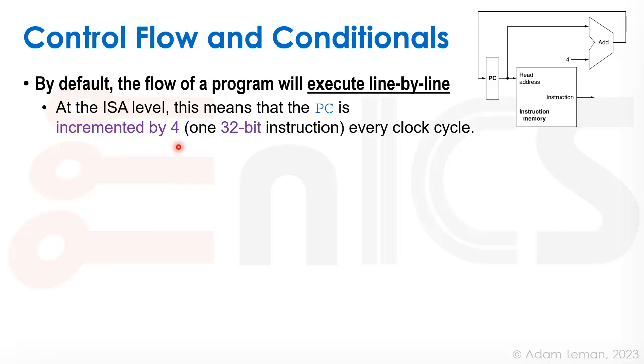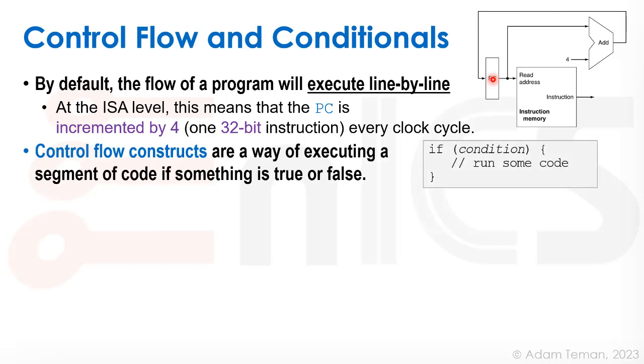So we take the PC, as we saw before, we put it into an adder that has a constant four, and therefore every clock cycle we increment it and store it back to the program counter. That will move us to the next instruction in a sequential fashion. However, what gives us a lot of strength for our machine is to use control flow.